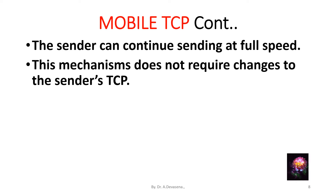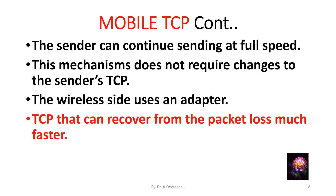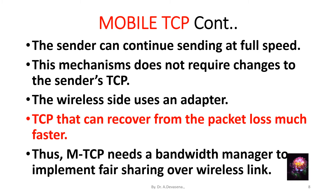Setting the window size to 0 forces the sender into persistent mode, meaning the sender will not try to retransmit data regardless of how long the receiver is disconnected. This mechanism does not require changes to the sender's TCP — the wireless side uses an adapter, allowing TCP to recover from packet loss much faster. Thus, MTCP needs a bandwidth manager to implement fair sharing over the wireless link.